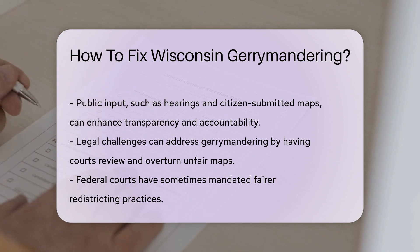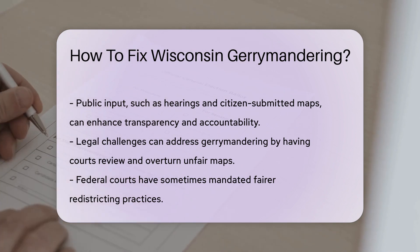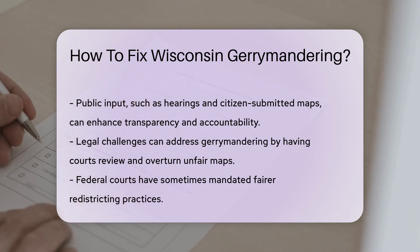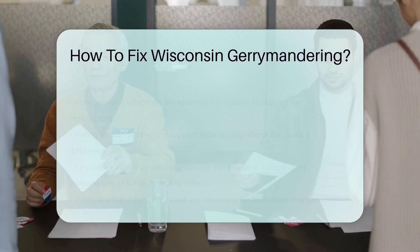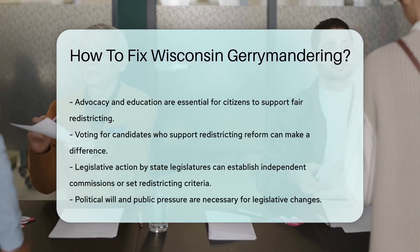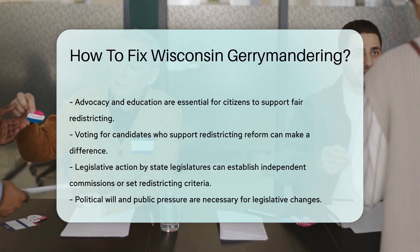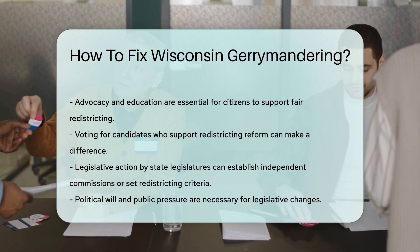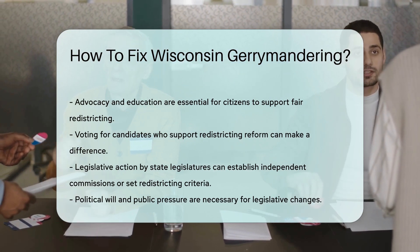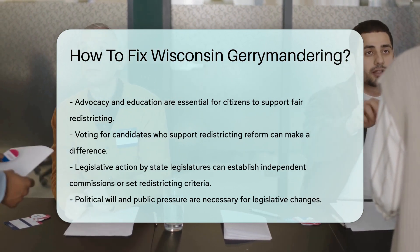Advocacy and education are essential. Citizens can get involved by supporting organizations that fight for fair redistricting and by staying informed about the issue. Voting in state and local elections for candidates who support redistricting reform is another way to make a difference.